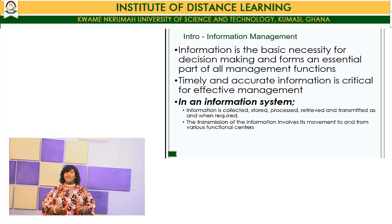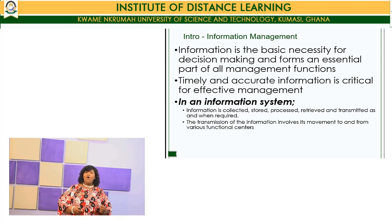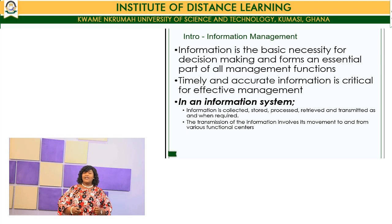In an information system, it is very important that organizations commit to investing the right resources in the collection, storage, processing, retrieval, and transmission of all kinds of data. When the wrong information is collected, it can affect decision-making. The transmission of information involves its movement to and from various functional centers. Without the right investment in how we manage information, there will be fragmentation among the various players within the supply chain.